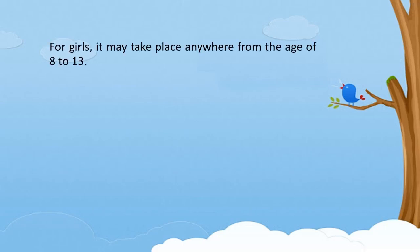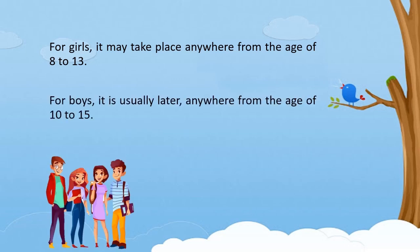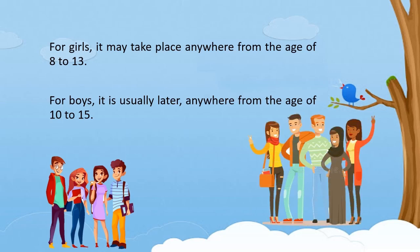However, not all adults start to experience puberty at the same age. For girls, it may take place anywhere from the age of 8 to 13. For boys, it is usually later — anywhere from the age of 10 to 15.